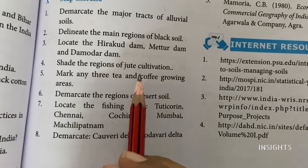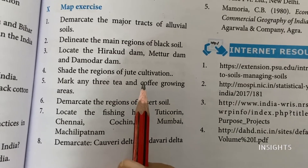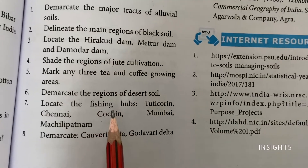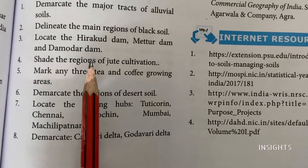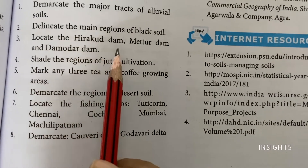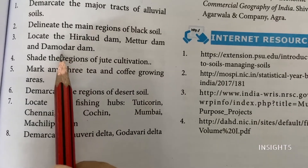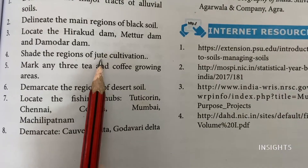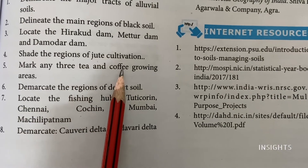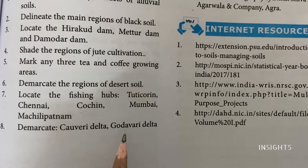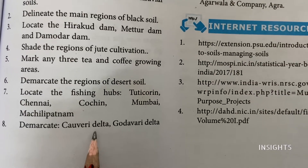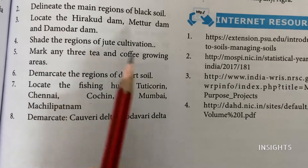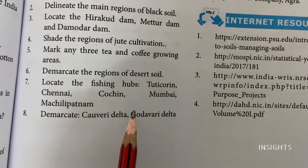Hello students, let us continue with lesson 3. If you have not watched the previous video, please go and check it out because some parts of this lesson I have marked there. Now let us continue with question number 3 — Hirakud Dam, Mettur Dam, and Damodar Dam we are going to mark. Apart from that, we'll be taking up jute cultivation, tea and coffee cultivation, and Kaveri delta and Godavari delta, which are paddy cultivation areas. I think we can club all these places in one map.